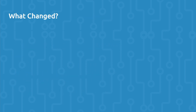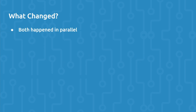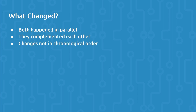So what changed? Two kinds of changes happened: technology improved, and people changed the way they worked. Both of these changes happened in parallel, and it's important to note that they complemented each other. Some technology improvements enabled new ways of working, and people who were already motivated to change how they worked utilized those technologies to drive the change. Just keep in mind that the changes are not necessarily listed in chronological order. This is my opinion on what changes had the most impact and led to today's DevOps model, based on my relatively short but diverse experience in the industry.